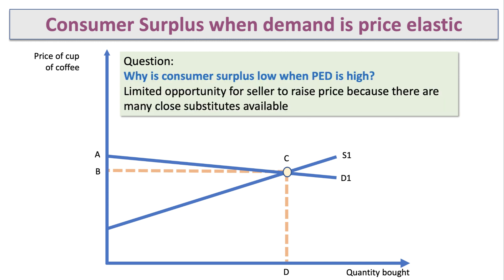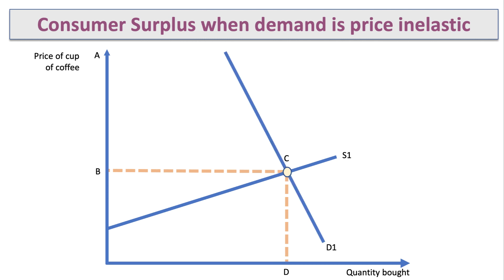The main reason consumer surplus is small with elastic demand is that there are so many substitutes in the market. If the seller raised the price, people would simply switch to another seller. So the price charged is low, and people don't have a high willingness to pay anything above price B.